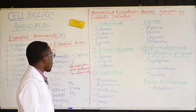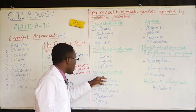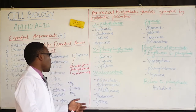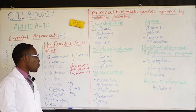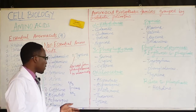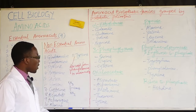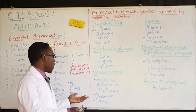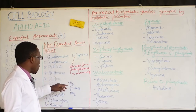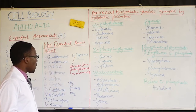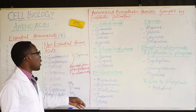The next intermediate precursor from the Krebs cycle is oxaloacetate. From oxaloacetate, we get amino acids such as aspartate, asparagine, methionine, threonine, and lysine. Oxaloacetate donates the carbon skeleton, which is then joined to an amino group, eventually forming these five amino acids.